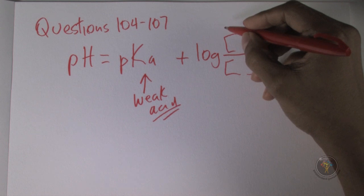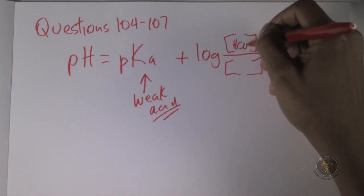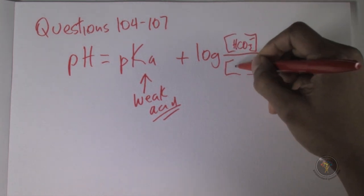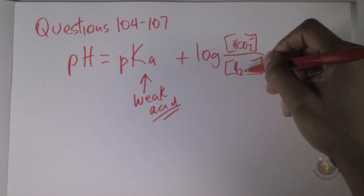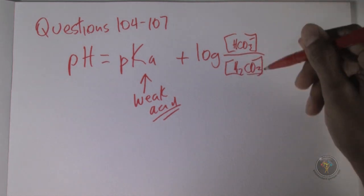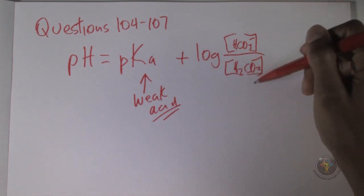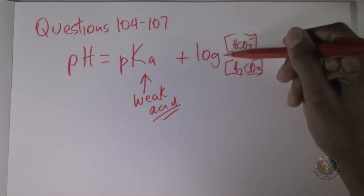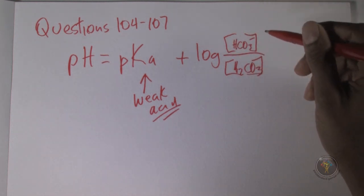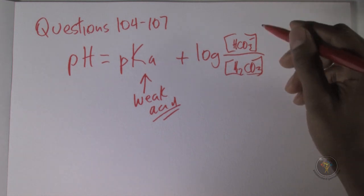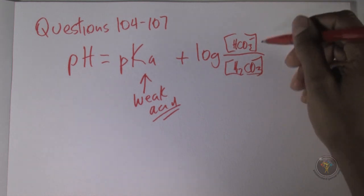The base over the acid, which is going to be, our base is HCO3 minus, over the acid, which is dihydrogen carbonate, over here, so it's the protonated form is the acid, like HCl, H2SO4, that's the acid, and then up here you have the deprotonated form, which is the anion, and so it's this ratio.